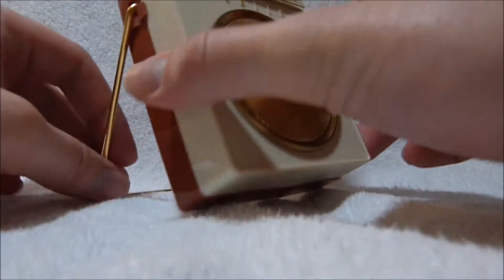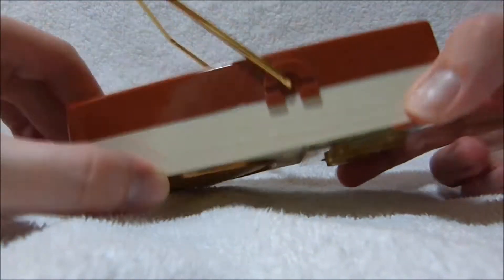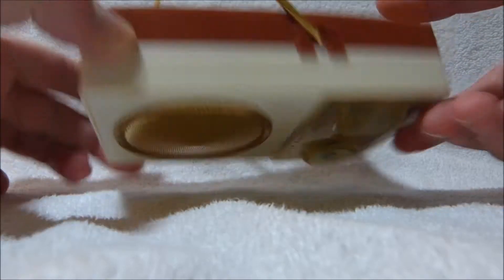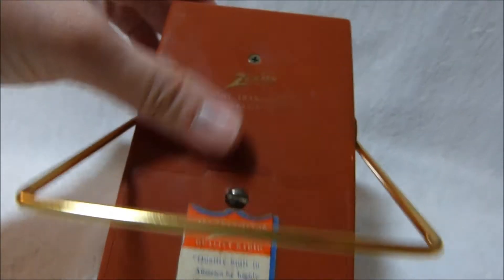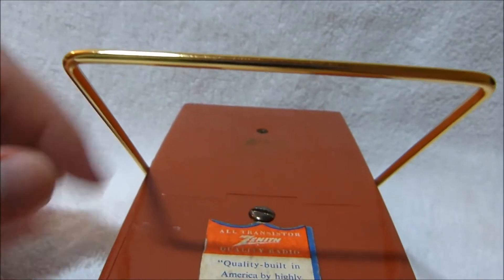There are a number of color variations of this model made. This is probably the most attractive and collectible one, the two-tone kind of dark red and white. I'm not sure what Zenith called this color.